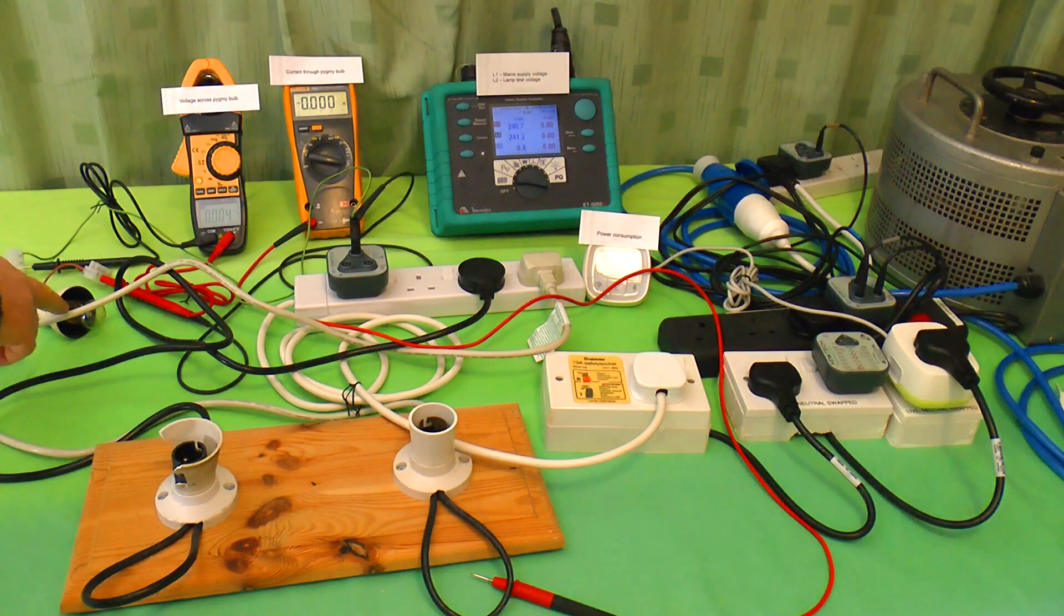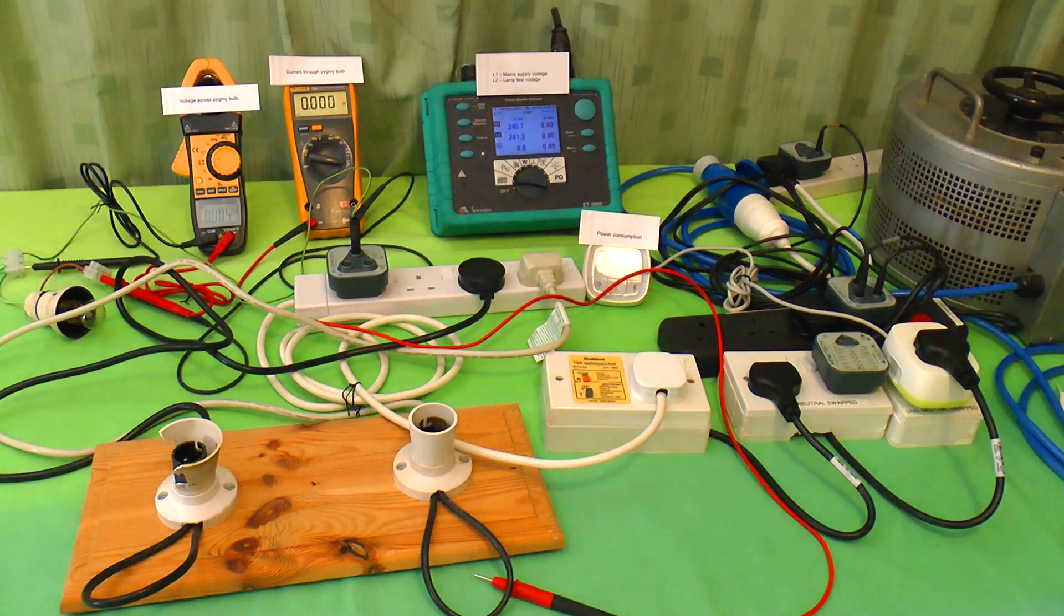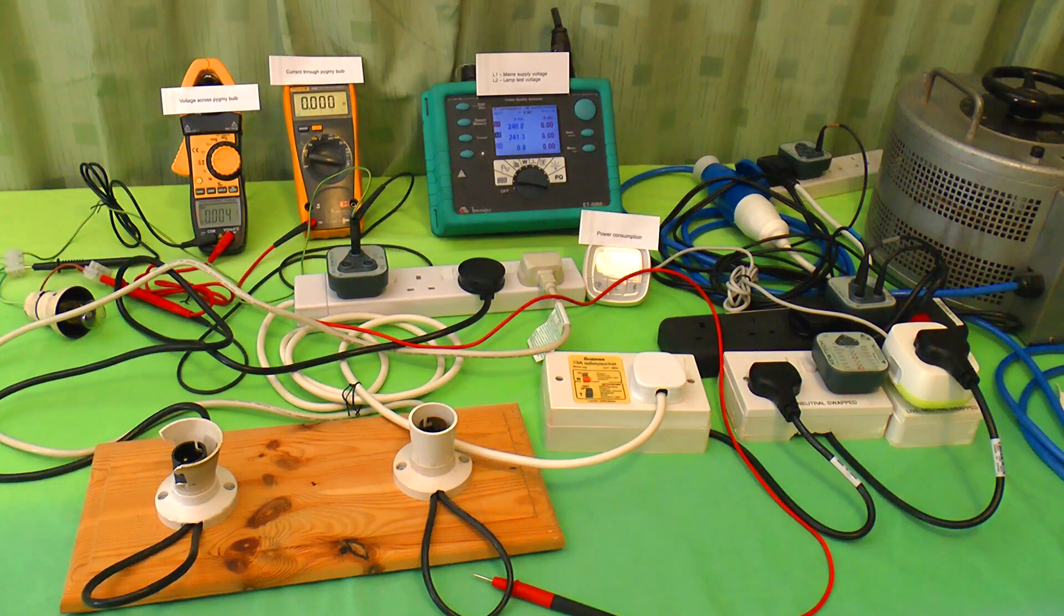This is a 240 volt 25 watt pygmy bulb, similar to the bulb you find in a microwave oven or a fridge. And it just happens to have about the same electrical resistance as the average human body does from one hand to the other at 240 volts.